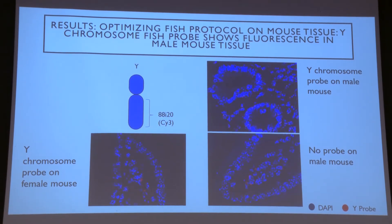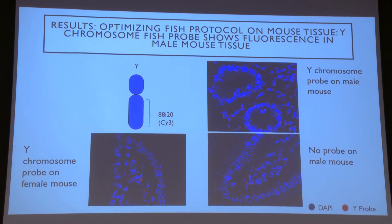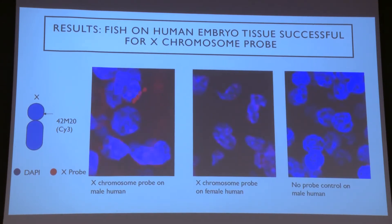The first thing we did was practice the protocol on mouse tissue, since human tissue is more valuable and we didn't want to go straight to it. The point was just to make sure the protocol was working. We found it was working — in the top right picture, there's one spot of fluorescence in each nucleus marked by DAPI, as expected for the Y chromosome probe on a male mouse, since males have one Y chromosome. The Y chromosome probe on the female mouse as a biological control shows no spots of fluorescence since females don't have Y chromosomes. The no-probe control shows no fluorescence either, as expected.